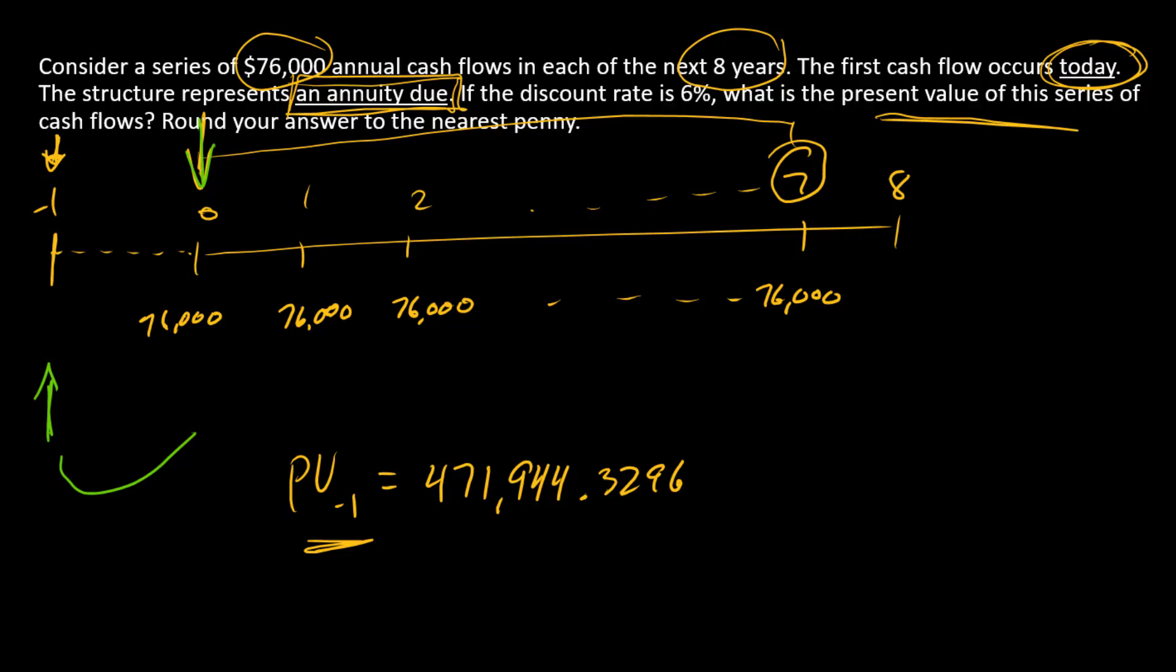Present value at time zero is simply going to be this number, 471,944.3296, multiplied by one plus the discount rate. We multiply by (1 + discount rate) because we are compounding forward one period.